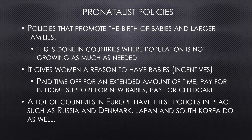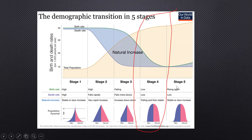Pro-natalist policies are mainly adopted in countries with negative or very low NIRs — mainly in Western and Eastern Europe like Russia and Denmark, and in Asia like Japan and South Korea. Unsurprisingly, most of these countries are in stage four or stage five of the demographic transition model, at risk of dropping below the replacement total fertility rate of 2.1.